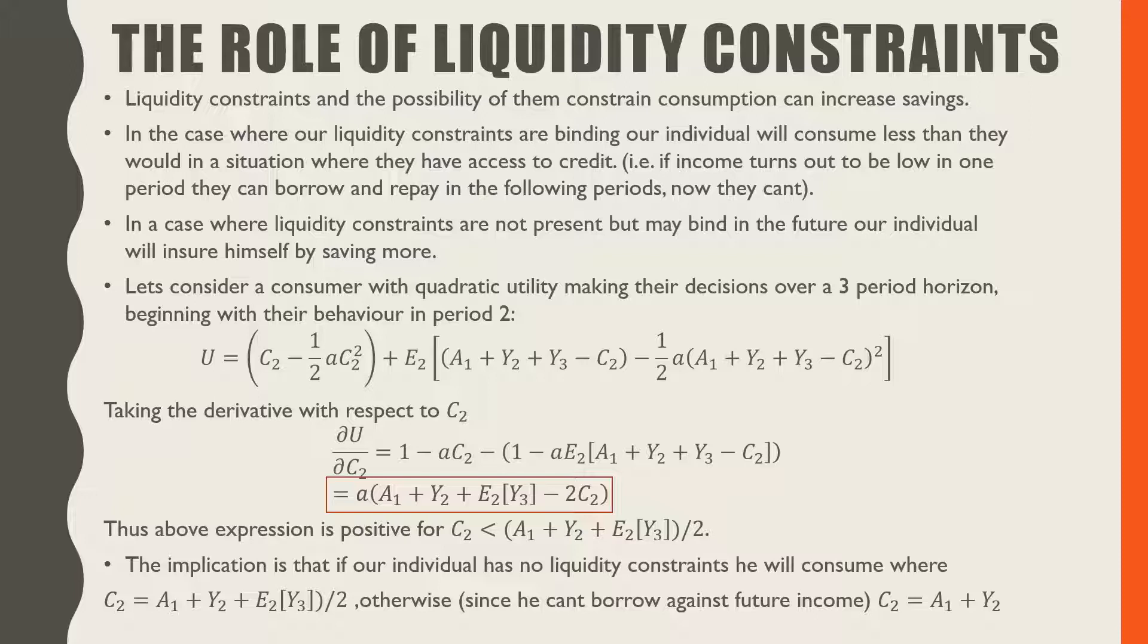We have our standard instantaneous utility function plus the expectation based on all the information in period two of this instantaneous utility function in period three. This is just C3 in these two points.